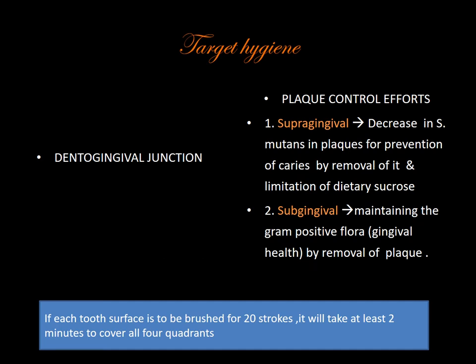Then comes target hygiene — we are targeting the dentogingival junction. It is an anatomical interface between the gingival tissue and the tooth structure, the region where the tooth gets attached to the gingival, formed as soon as the tooth erupts in the oral cavity. Plaque control efforts will be mainly supragingival — to decrease Streptococcus mutans plaque for prevention of caries by removal and limitation of dietary sucrose. By removing subgingival plaque, we maintain gram-positive flora.